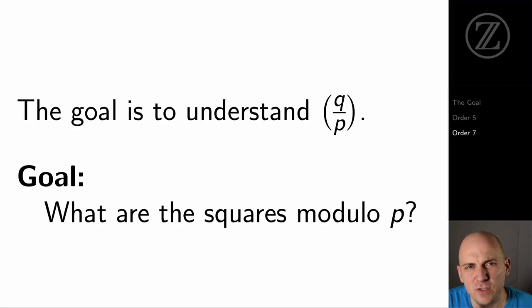Our goal is to understand q on p. We want to know what numbers are squares modulo p. And we're seeing some inklings of this. We're seeing that when p is 1 mod 5, then 5 is a square. Or that when p is 1 mod 7, then negative 7 is a square. But is there a general pattern? Is it possible to determine what numbers are squares modulo p? Is it like the primes where we have to do complicated primality tests? Is there some shortcut to understanding which numbers are squares modulo p? That's a goal for you to explore.